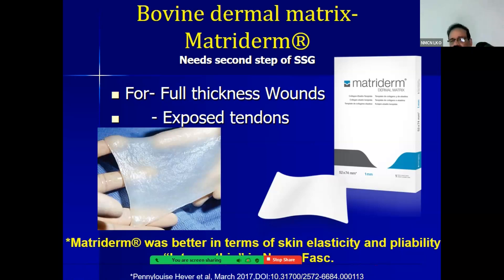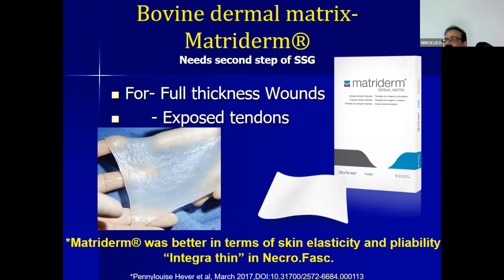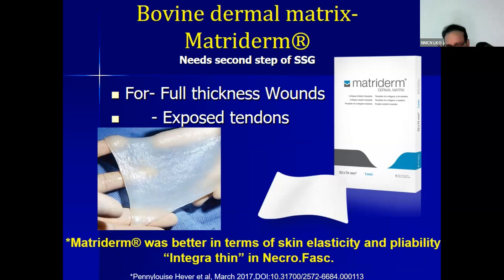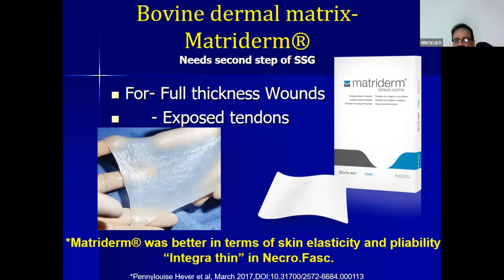In the first sitting, Integra is placed, then after tissue has healed, SSG is put as the final healing step. The Metryderm is a bovine dermal matrix that also needs a second step of SSG if the wound is big. It is used for full-thickness wounds and for exposed tendon — in diabetic foot ulcer, when tendon is exposed it is very difficult to get granulation tissue over it and it easily becomes necrotic, leading to chronicity. A trial comparing Integra and Metryderm found that Metryderm was better in terms of skin elasticity and pliability, so wherever there is a joint, Metryderm can be a better choice.